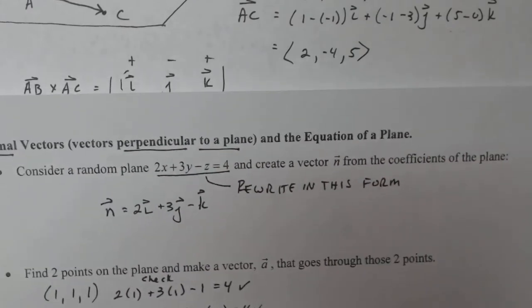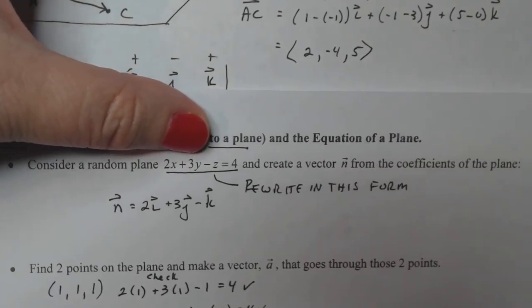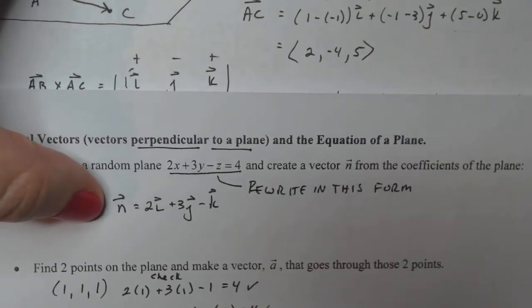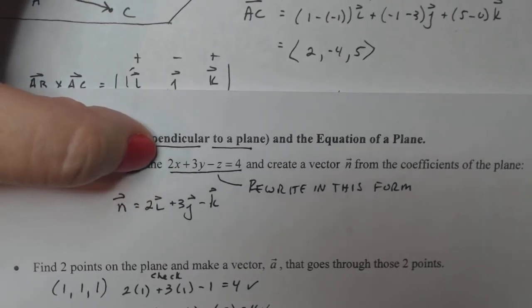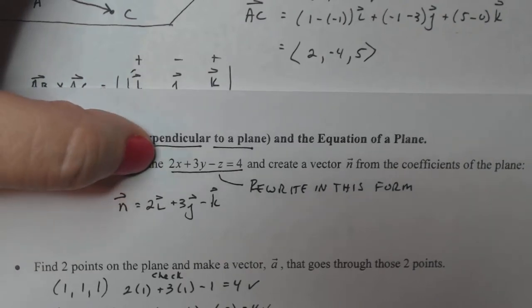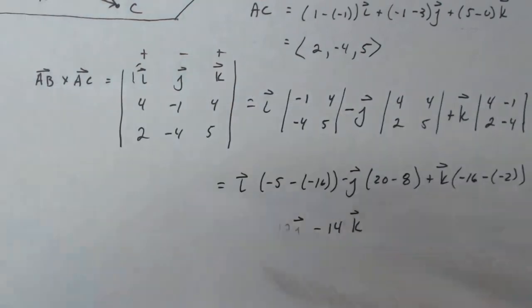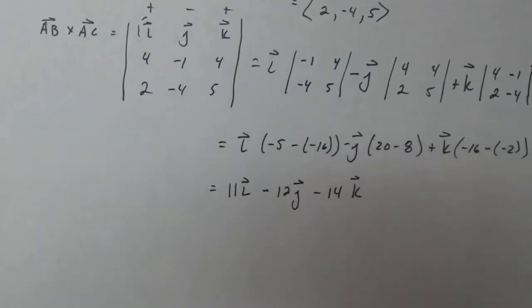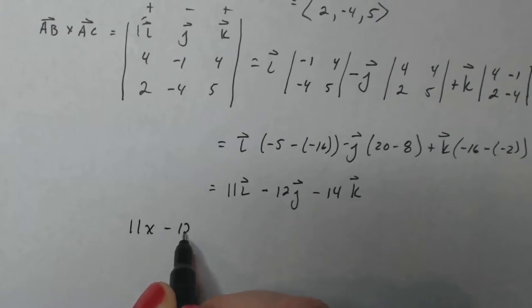Now, if we think back to the previous work that we did, we learned this. If I write my plane like this, that's a vector that's normal. Right now we have this and we want to go back to this. So I just take the i, j's and k's and make it the coefficient of x, y, and z. And then that's still an unknown, but we can solve for that. So that means that here my plane will be 11x minus 12y minus 14z equals some constant. I don't know.